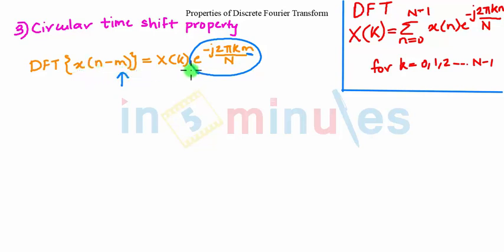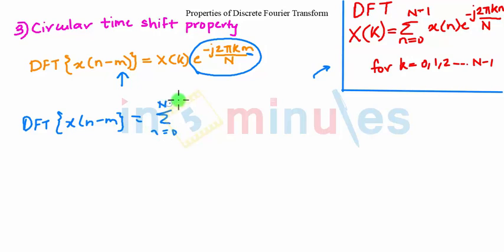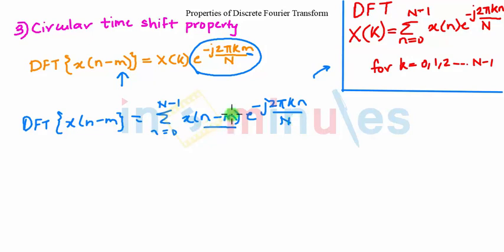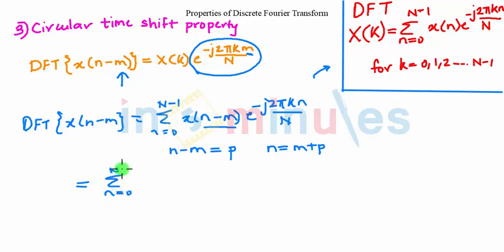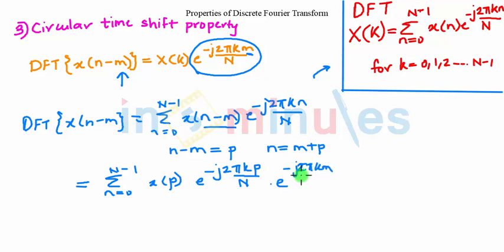To prove this, we will follow the basic definition of DFT. The DFT of x of (n minus m) is equal to summation from n = 0 to N minus 1 of x of (n minus m) times e raised to minus j 2 pi k n by N. Before expanding, we substitute n minus m as p, so n equals m plus p. It then becomes summation of x of p times e raised to minus j 2 pi k p by N, multiplied by e raised to minus j 2 pi k m upon N.